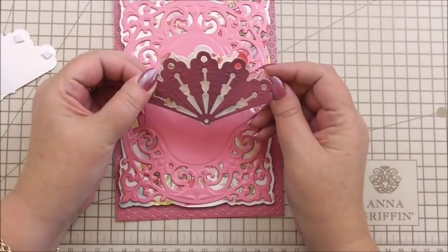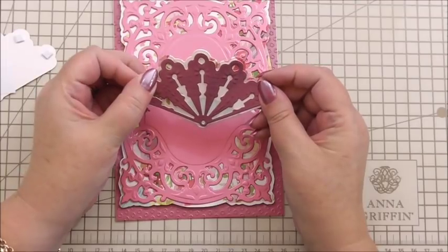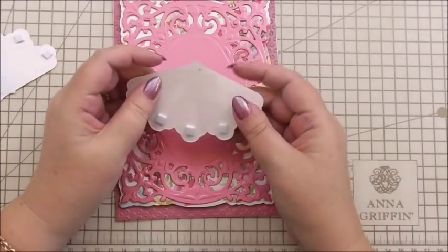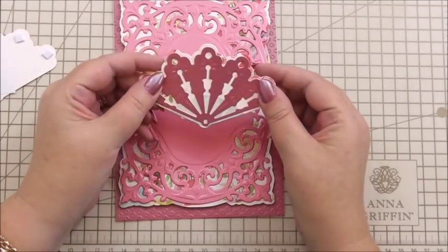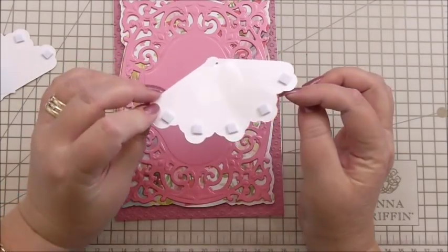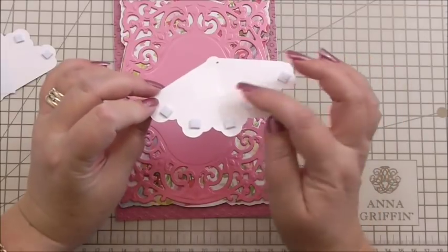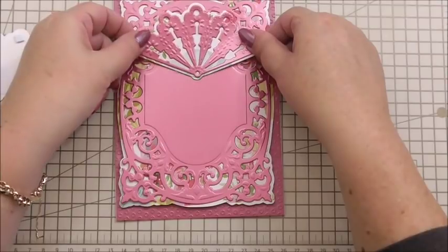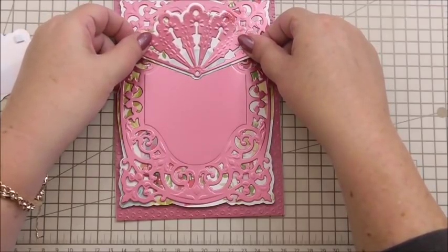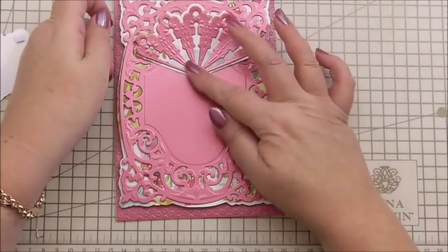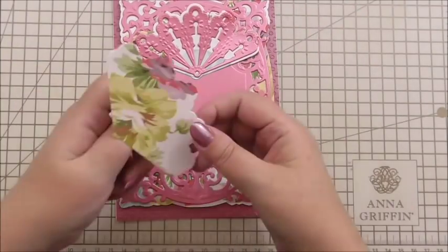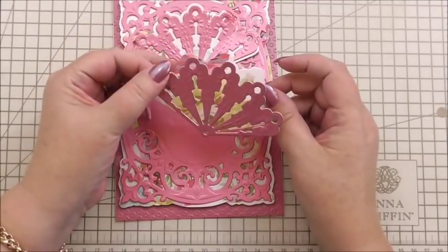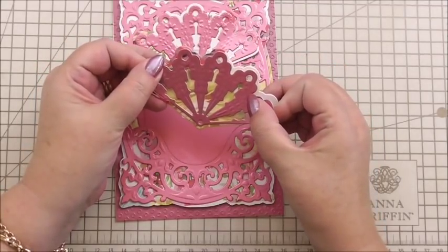The base layer has got 3D foam along the edge and tape towards the middle, because I want it to sit raised at one side and then flat to the middle. The second fan and its shadow die cut is exactly the same. So the actual fan die cut was on flat tape, and then the shadow, 3D foam along the edge and flat tape towards the middle.